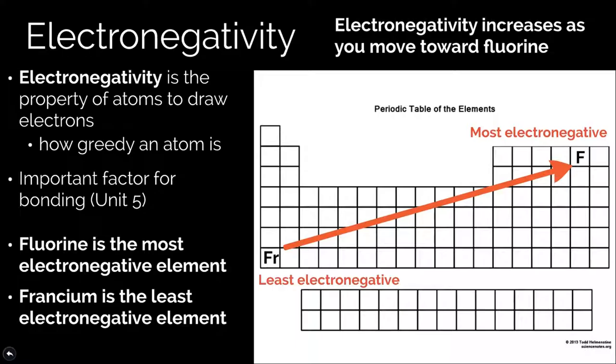I think it's easier to focus on fluorine, because anytime you're moving towards fluorine, you're increasing the electronegativity. That's in two directions. If you're comparing two elements in the same column, the one that is higher up on the periodic table will be more electronegative. And if they're in the same row, the one farthest to the right will be the most electronegative. As an example, let's say we're comparing sodium and magnesium. Magnesium is closer to fluorine — it's farther to the right — so magnesium will be the more electronegative atom.